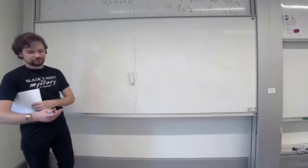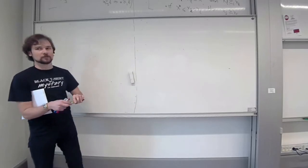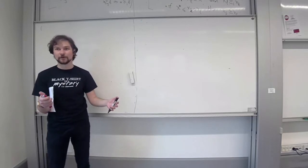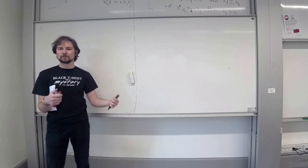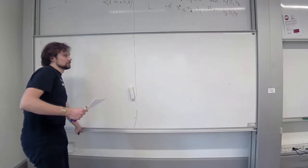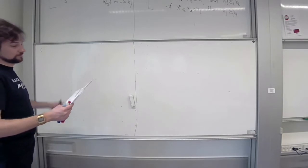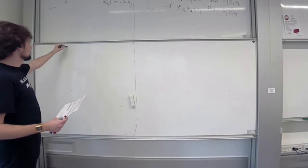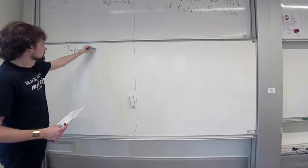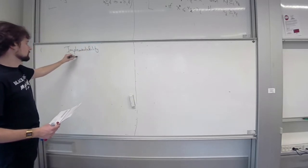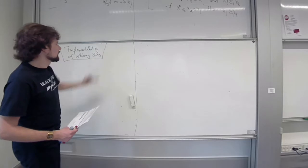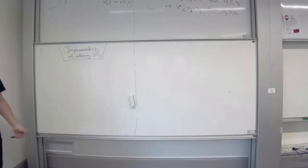If we look at general social choice rules, going back to the mechanism design environment where we need to provide incentives for people to reveal their types, how can we determine whether a given social choice function is implementable or not? This is our topic for the remainder of today and some of next time.